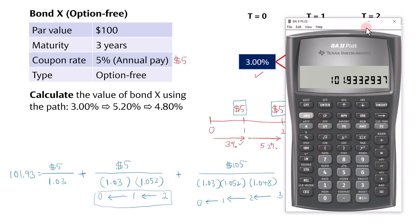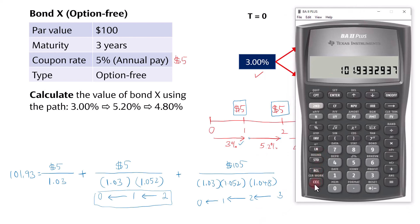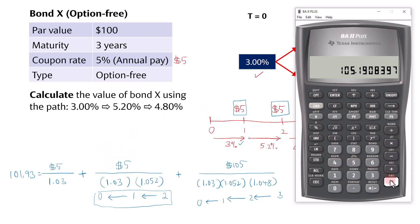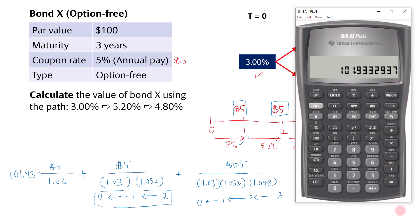An alternative method without using Store and Recall is to discount sequentially from the last period to time zero. Take 105 and divide by 1.048, then add the year 2 coupon of 5, divide by 1.052, add the year 1 coupon of 5, and finally divide by 1.03. This also gives 101.93. You need to remember to add the coupon at each discounting step, except when you reach time zero.